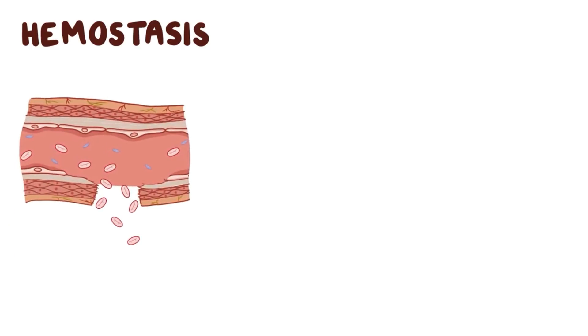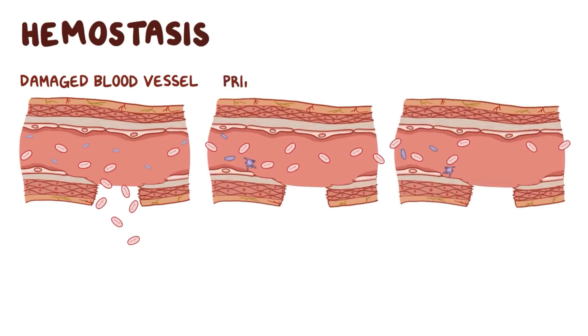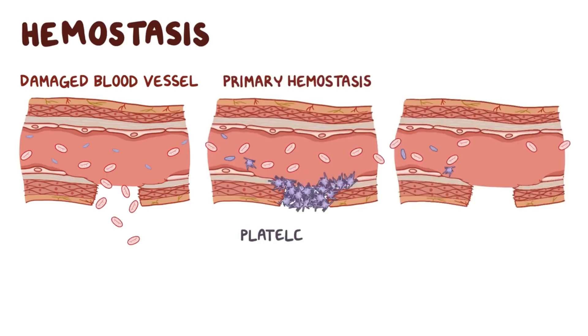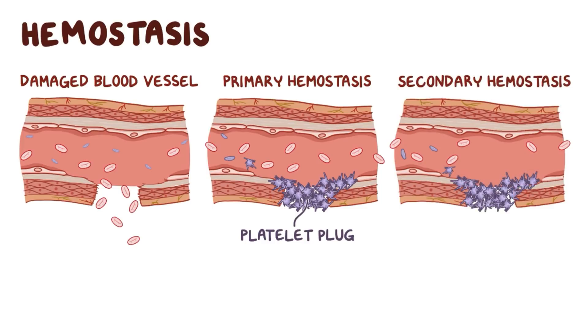Factor V Leiden is a hemostasis disorder. Hemostasis is the process where blood flow is stopped after there's damage to a blood vessel and it has two steps. Primary hemostasis involves the formation of a platelet plug at the site of injury and secondary hemostasis involves the coagulation cascade where several clotting factors come into play to form a fibrin mesh over the platelet plug to reinforce it, forming a blood clot.